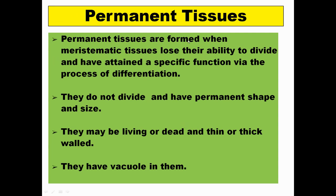Permanent tissues are formed from meristematic tissue. They lose their ability to divide and perform specialized functions via the process of differentiation. They do not divide at all and have permanent shape and size. They can be living or non-living, have thick or thin cell walls, but they have a full-fledged vacuole because they perform specialized functions.